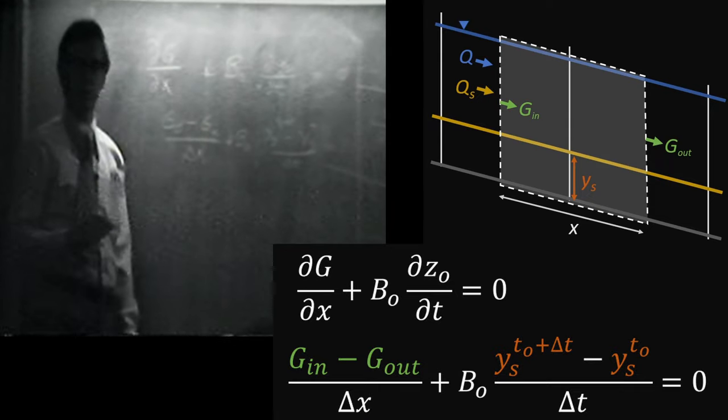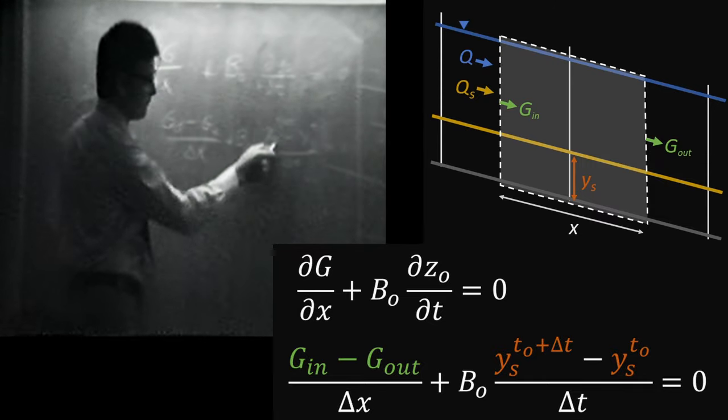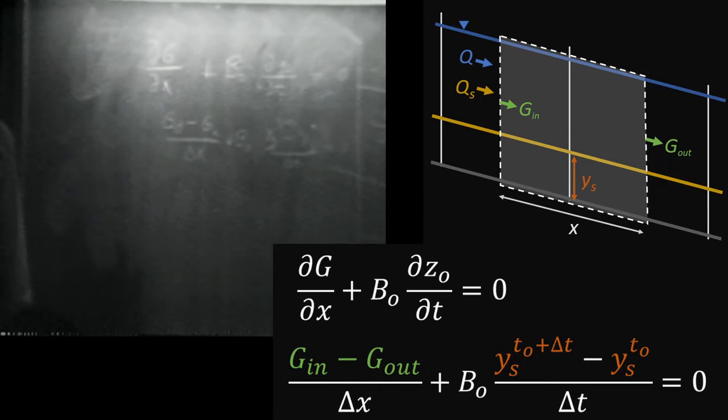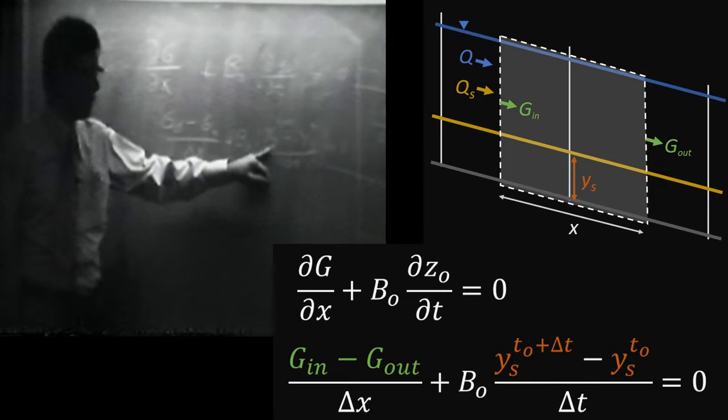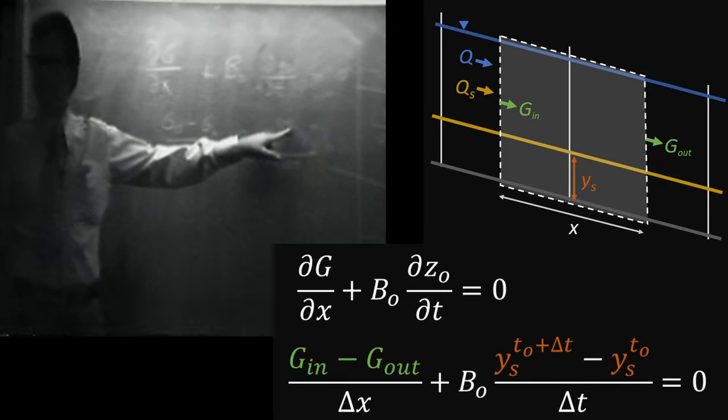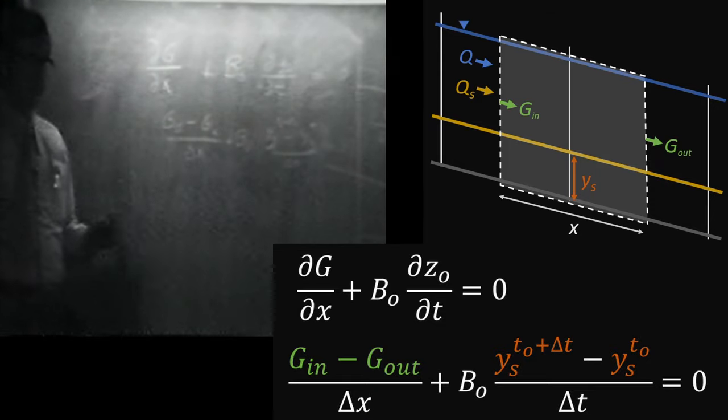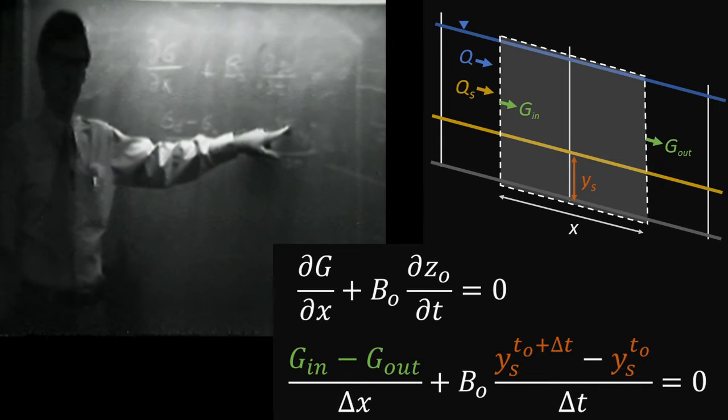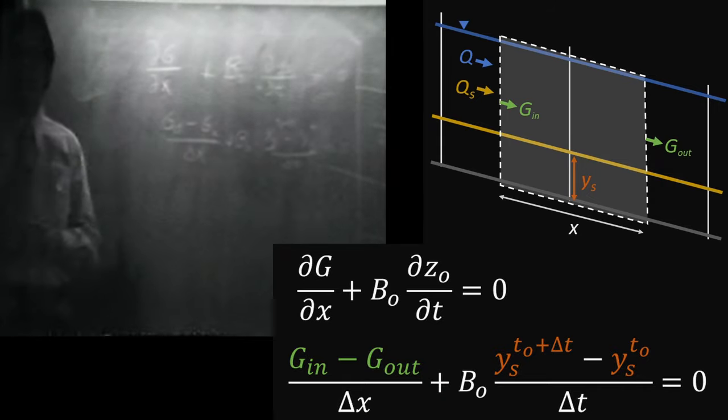What we want out of this equation is Y sub S at some future time. If we know what Y sub S is at the present time, and we're interested to project over 50 years, what will the bed profile become at the end of 50 years? Then we want to know what Y sub S is where delta T is 50 years. I'll say at the onset, we have to take fairly small delta T values. So in order to get to that 50-year projection, we take a lot of delta Ts and go gradually from time zero to, say, time 50 years.